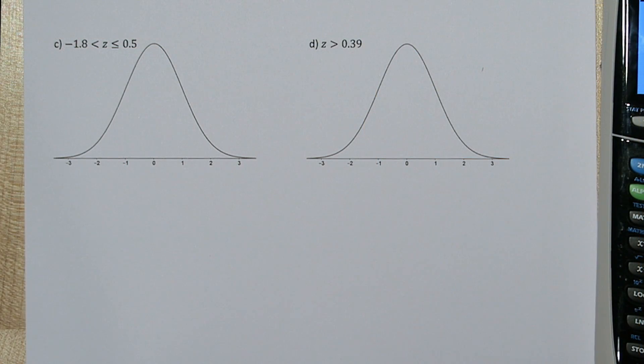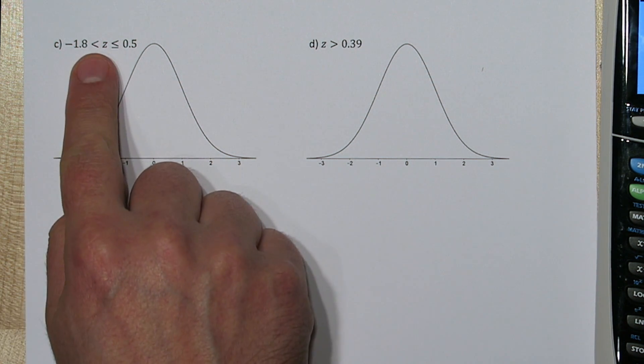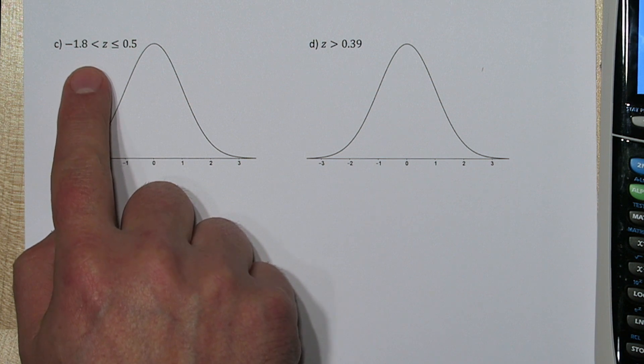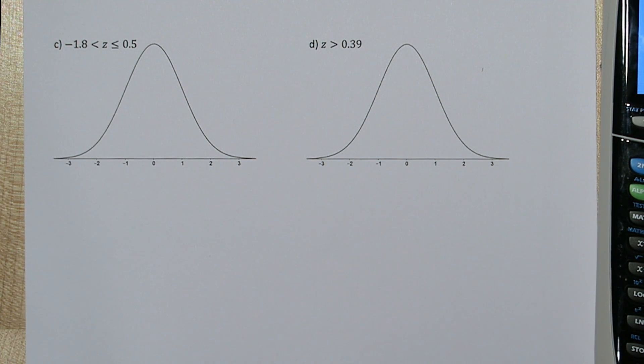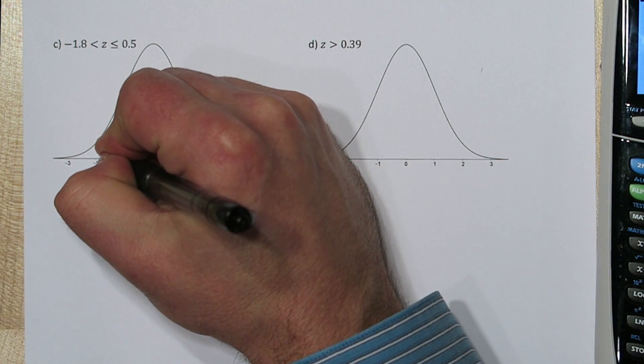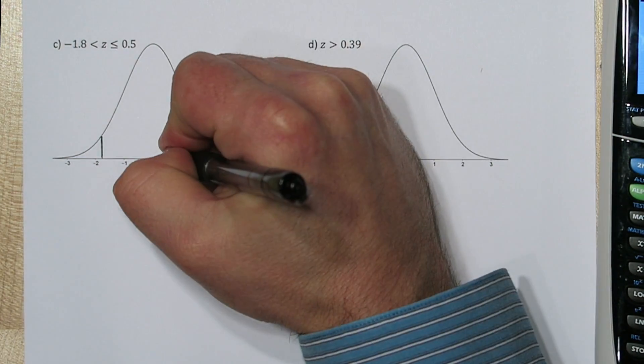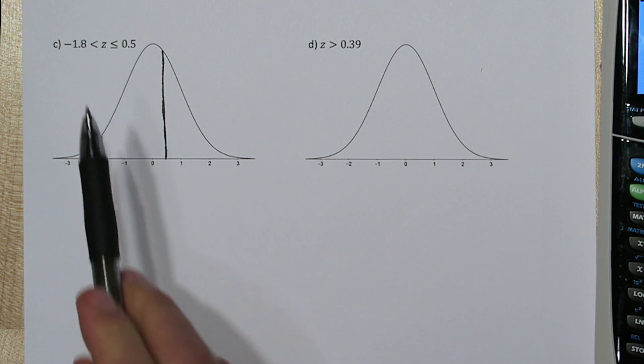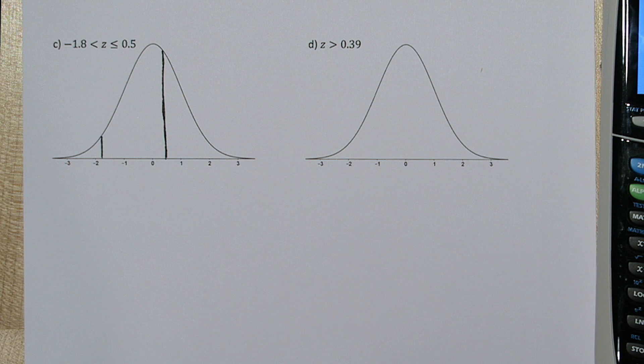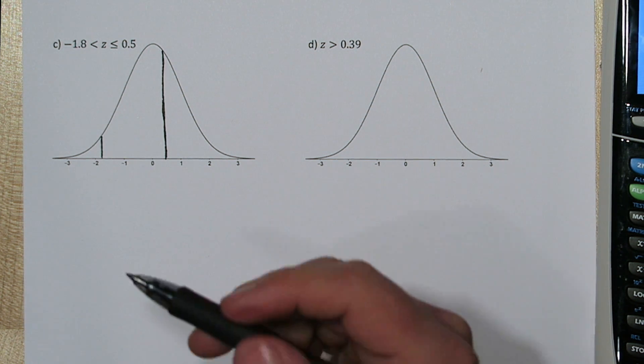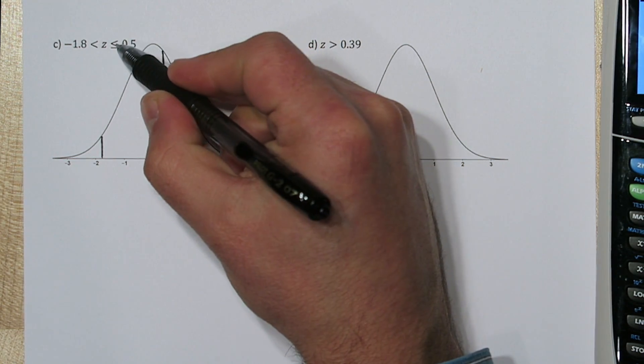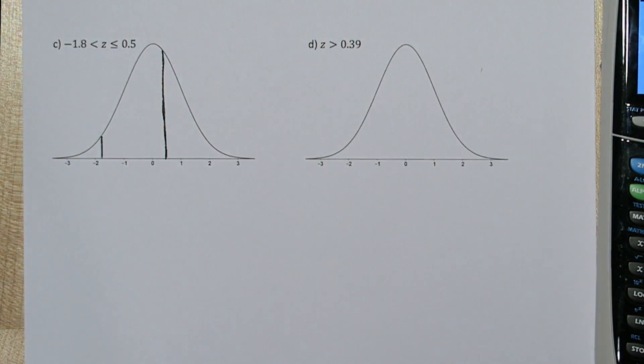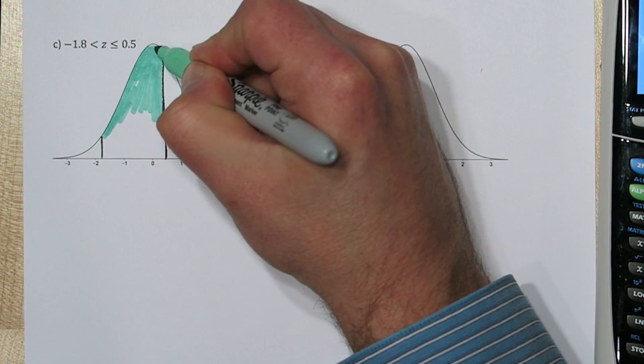Now on these next two, you have to use the calculator or a table of some sort. The empirical rule won't help us with these strange values. Let's start with this one. Our lower limit is negative 1.8, so that's about here. And our upper limit is 0.5. One thing to note here, this is less than and this is less than or equal to. On continuous density curves, it makes no difference. There's actually no area under any single point. So whether it says less than or less than or equal to means nothing. You don't change your limits to adjust or compensate. You just leave them exactly as they are.